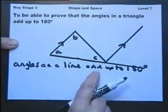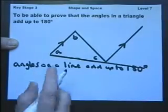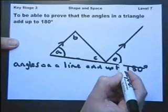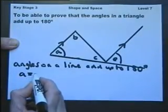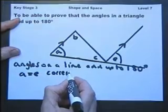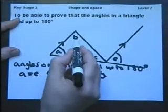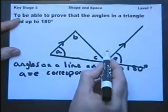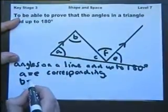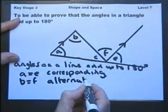The angles on a line add up to 180 degrees, and our knowledge of parallel lines. The angles on a line add up to 180 degrees. Because this angle A equals this angle E, because they are called corresponding angles. We also have that this angle B equals this angle F, because they are called alternate angles.